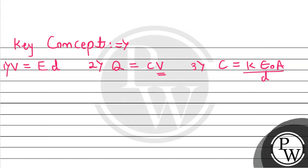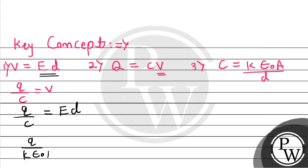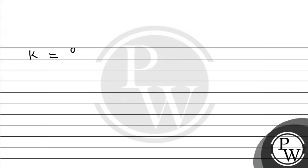So we have Q. Using the three formulas, we substitute V equals E times D into Q equals C times V, and C equals K epsilon-naught A divided by D. The D's cancel out, so the formula for K becomes: K equals Q divided by A times epsilon-naught times E. Now we substitute the values.